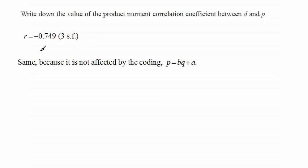And it's the same because it's not affected by the coding. You'll notice I've rearranged the coding so that we've got P equals BQ plus A. So in a transformation like this, nothing will change for the correlation coefficient.